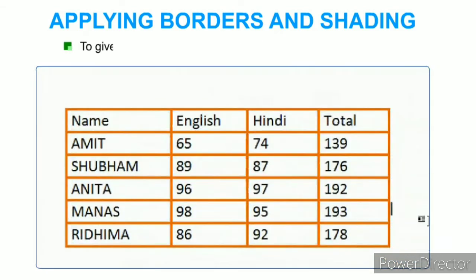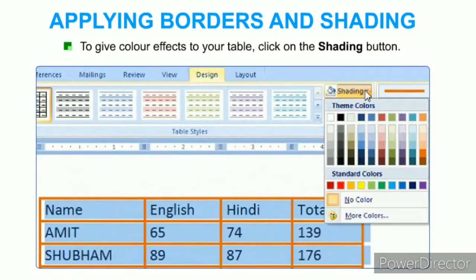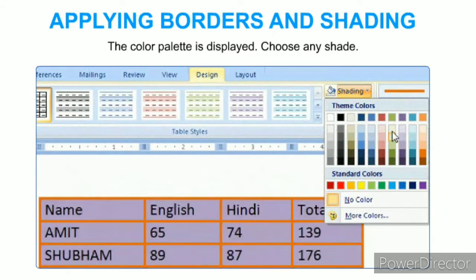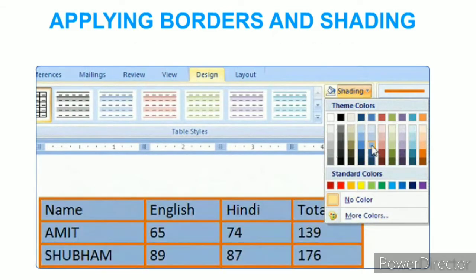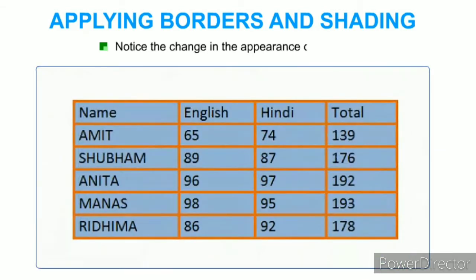To give color effects to your table, click the Shading button; the color palette is displayed. Choose any shade and notice the change in the appearance of the table.